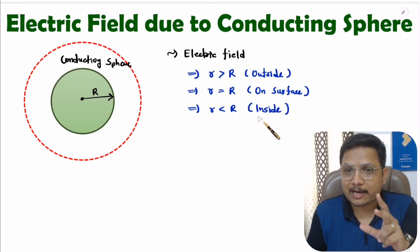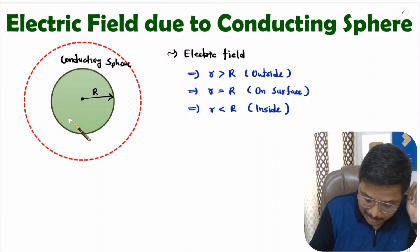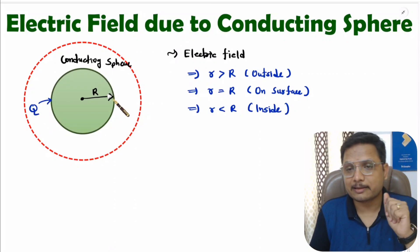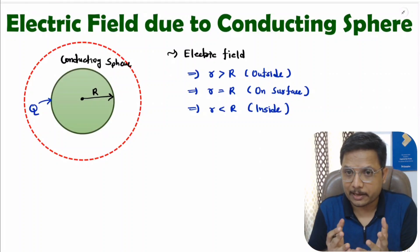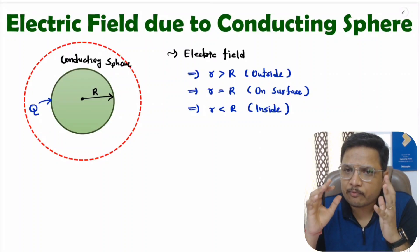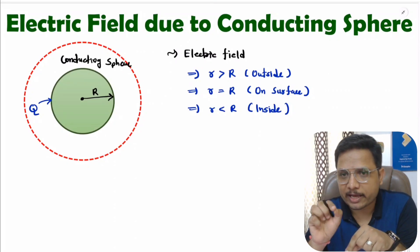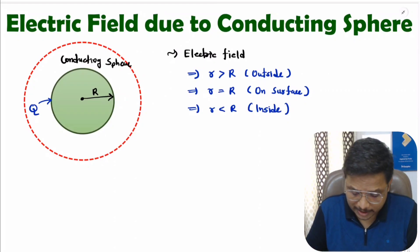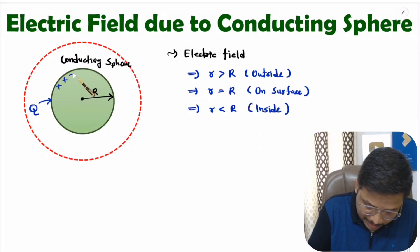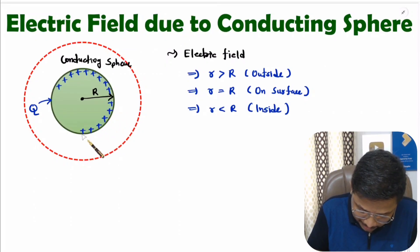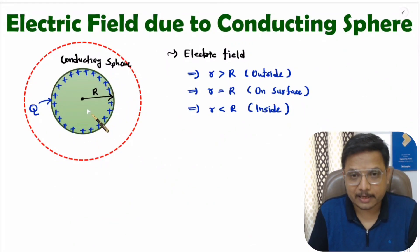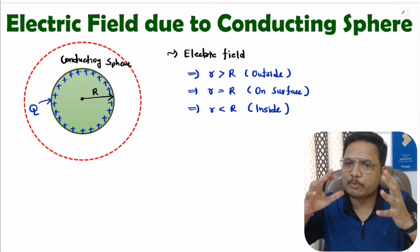Now, we need to understand how charge distribution happens. If we deposit charge Q on this conducting sphere, the charge is uniformly distributed on the surface only. For any volume body, the deposited charge gets uniformly distributed on its surface. So charge Q stays on the surface of the conducting sphere, and inside the sphere there will be zero charge.